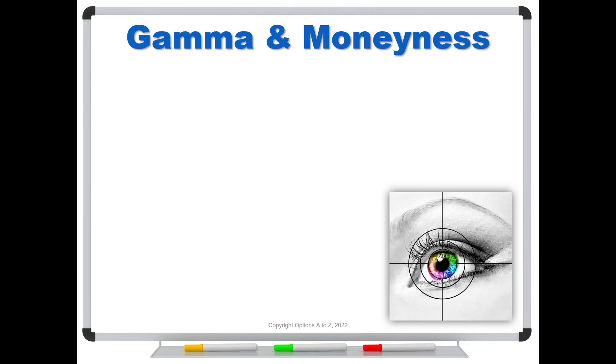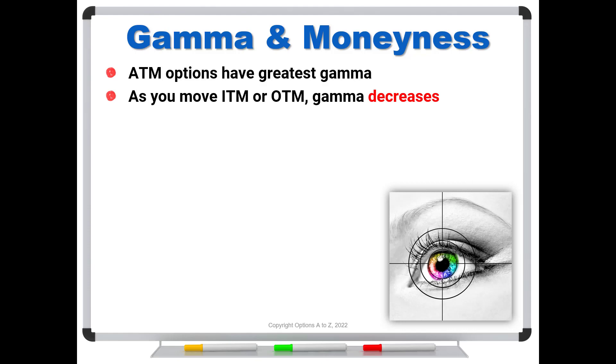Recall that moneyness is this collective term for in, at, and out of the money options. So it's your at the money options that have the greatest gamma. However, as you move in the money or out of the money, gamma decreases.